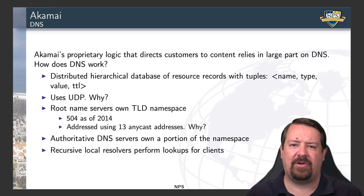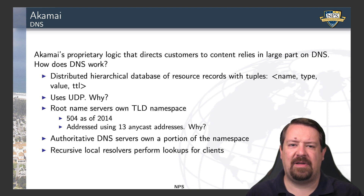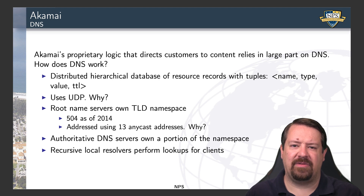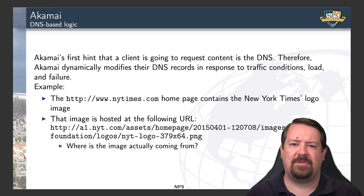As a reminder, DNS is a distributed hierarchical database of resource records — tuples that match a name with a value, where that value might be another name or an IP address, and the type tells you what the value represents. DNS works over UDP because it's exchanging very small messages and doesn't need the overhead of connection setup for each request. The hierarchy has root name servers that delegate to TLD servers, which then direct traffic to authoritative DNS servers. Clients talk to a recursive local resolver that interacts with the root, TLD, and authoritative name servers on their behalf, allowing for caching at the local resolver.